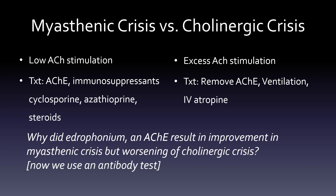On the cholinergic crisis side, we remove the acetylcholinesterase inhibitor, provide ventilation if they need it, and then give IV atropine. Why does IV atropine make sense? Because you had a situation with too much acetylcholine, and atropine is anticholinergic — so it goes against that acetylcholine.